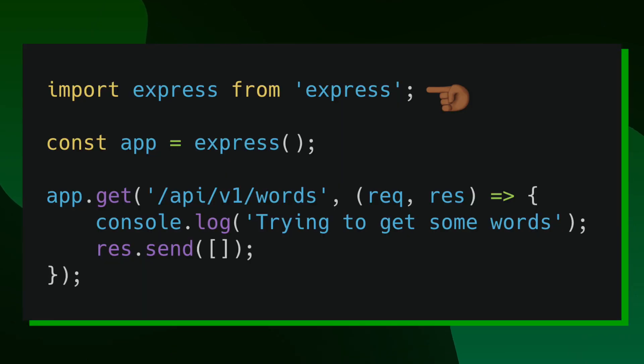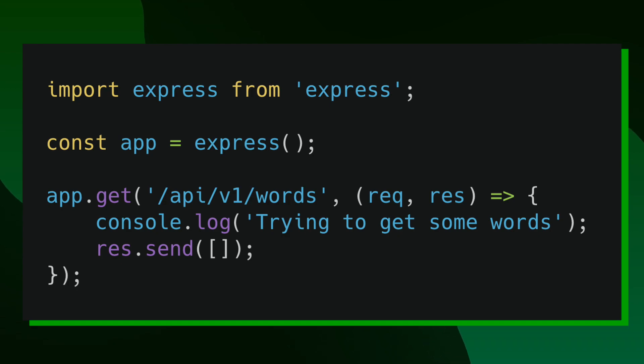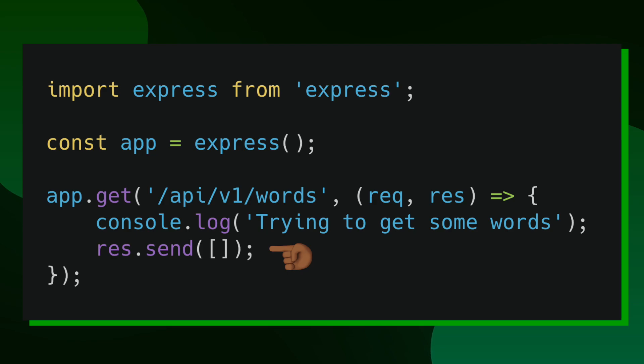Another example is using the Express framework when building web servers. In this short example, I import the Express package and create a new app with the express function. Then I call the get function, which expects two arguments — the first being the route that we can hit with a GET request, and the second being the callback function. Express returns back to us the request and response objects that allow us to learn about what data was provided from the client's request and what kind of data we want to respond back with. In this short callback function, all I'm doing is printing out 'trying to get some words' on the server side, and then returning back all the words found at this API request — which is none, so I'm returning an empty array. What's really interesting is that we have no idea where req and res really came from — all we care about is that req and res exist and we can use them for whatever logic we want to perform.